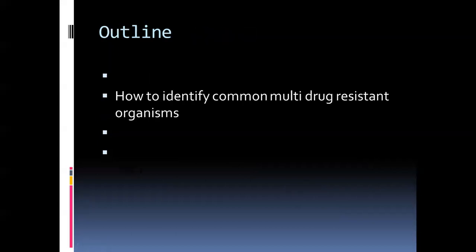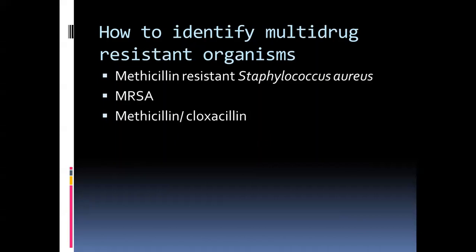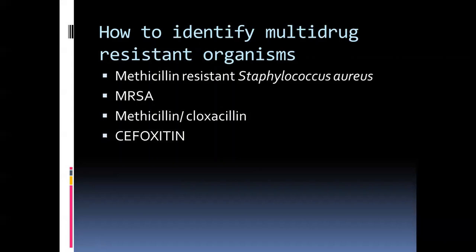How to identify common multi-drug resistant organisms: the first one is methicillin-resistant Staphylococcus aureus, more commonly known as MRSA. The antibiotic reported in laboratory reports is methicillin or cloxacillin, which can help identify that the organism is MRSA. But if you do not have the final report and are asking the laboratory preliminarily, the antibiotic you should ask about is cefoxitin, which is the disc used in the laboratory to check for MRSA, as it detects the resistance most adequately. Treatment of choice for MRSA is vancomycin, and thankfully in our setting we do not have reports of resistance to vancomycin yet.